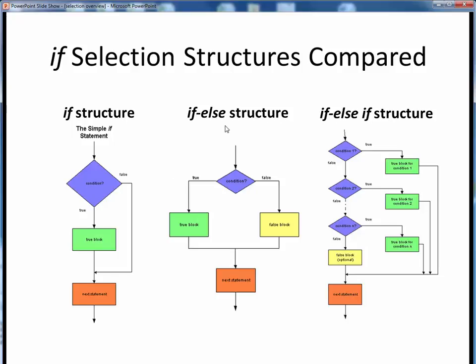The next example in the middle shows the next slightly more generic form, the if-else structure. The same thing happens here. We reach this condition, we ask some yes-no question, and it's evaluated to a single Boolean true-false value.